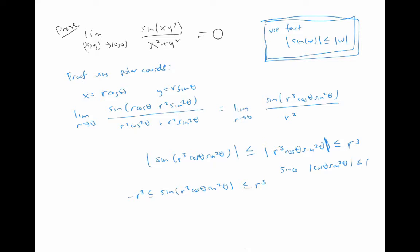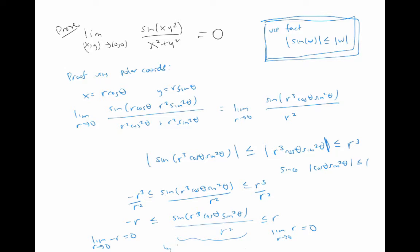In other words, sine of r³ cosθ sin²θ is between −r³ and r³. So if we divide all three sides by the positive number r squared, we get that −r is less than or equal to our quantity of interest, which is less than or equal to r. Now we can apply the squeeze theorem. The limit as r→0 of −r is zero, and the limit as r→0 of r is zero, so by the squeeze theorem the limit of the middle quantity is also zero. That completes our proof using polar coordinates.